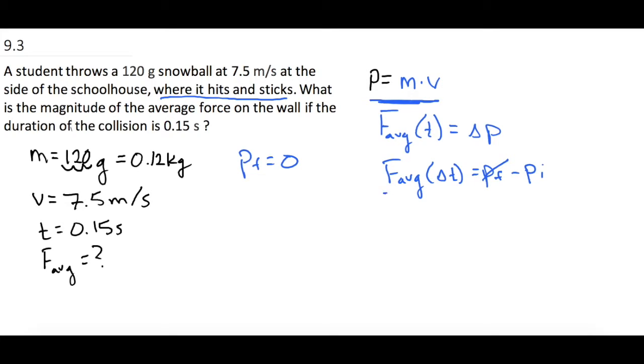So let's go ahead and get rid of the final velocity. Now let's divide both sides of the equation by T. Those cancel. Divide by delta T. So now we have isolated what we're looking for. The average force is equal to a negative initial momentum divided by the change in time.